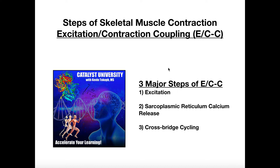With this process of muscle contraction, we can really subdivide this into three major parts. We have the initial excitation, and then two, we have the sarcoplasmic reticulum calcium release. In order to get muscle contraction and shortening of the sarcomere, we have to have calcium release from the SR. And then last, we have cross-bridge cycling, which we'll actually cover in a separate video.